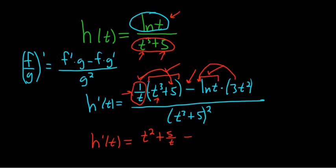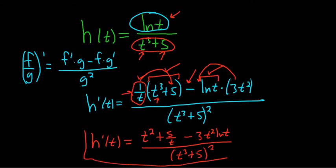And then minus 3t squared natural log of t, and it's all being divided by this bottom piece here, t cubed plus 5 quantity squared. And that is the final answer. I hope that made sense.